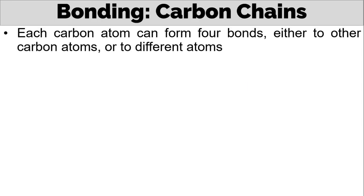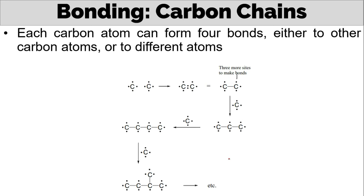Each carbon atom can form four bonds, either to one carbon or to different atoms. When these two carbon atoms combine, we will have this. And if you notice, carbon has three more sites to make bonds. So it will bond with another carbon, which will give us three carbon chain. Then another, which will give us four carbon chain. And bond, which will give us this branch chain. And etc. So the bonding never stops in carbon chains, unless all the electrons are paired with hydrogen or other atoms.